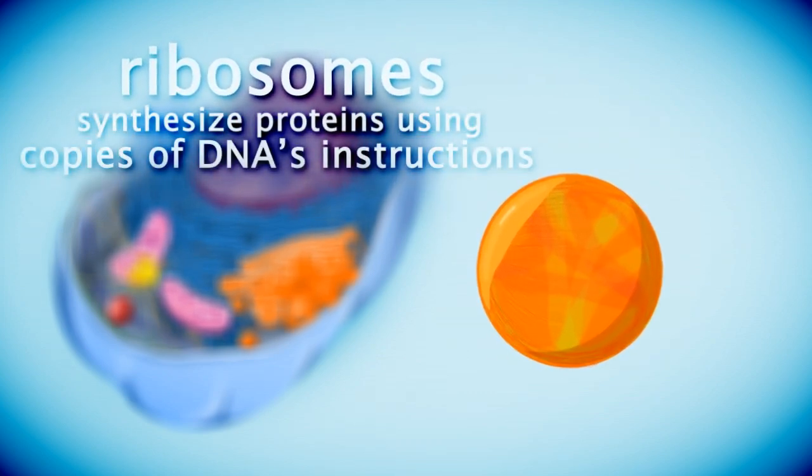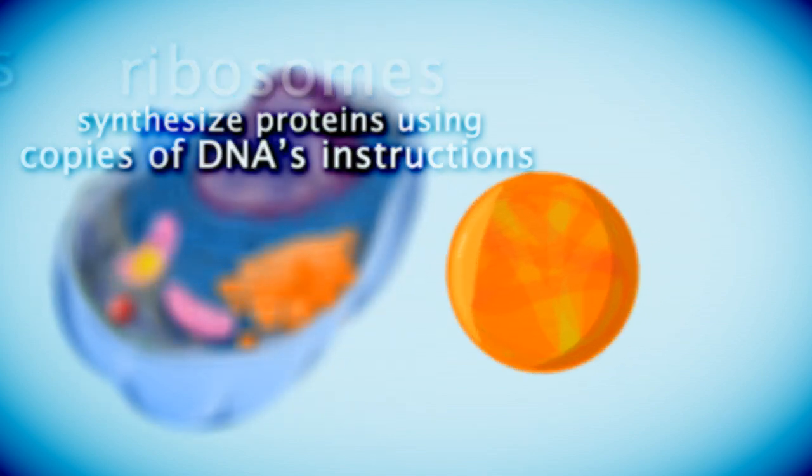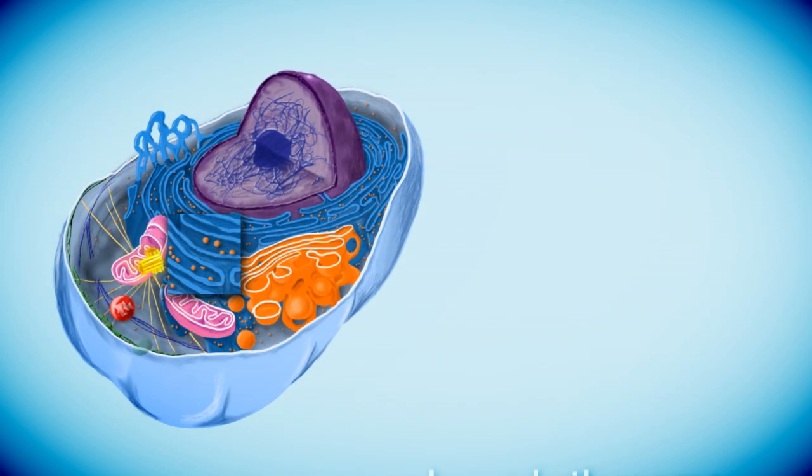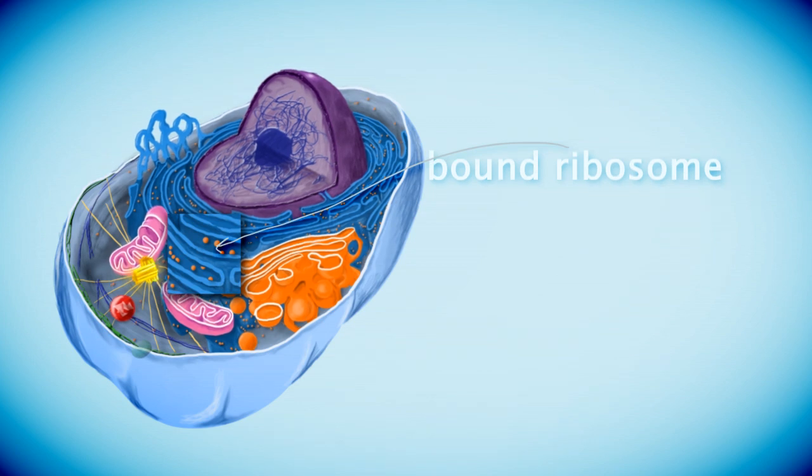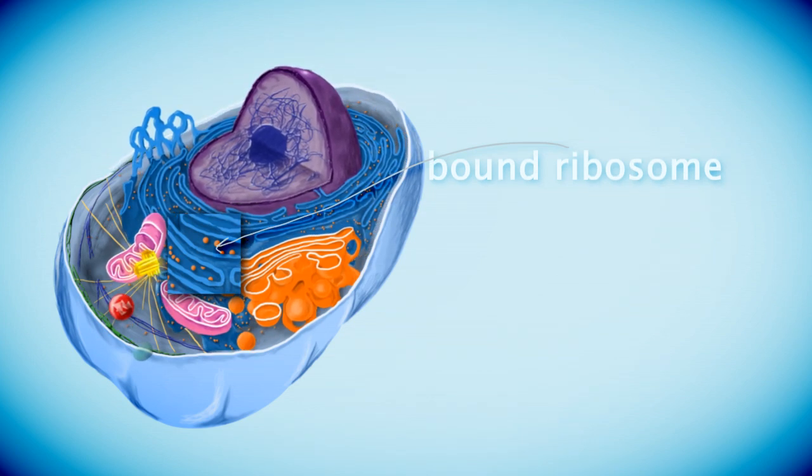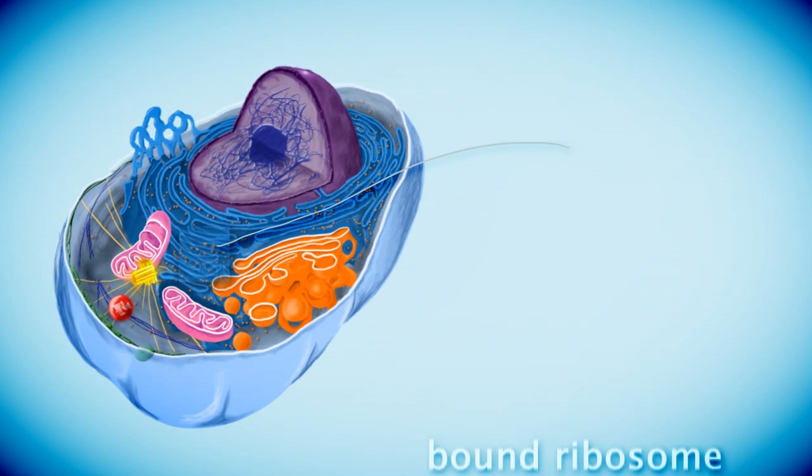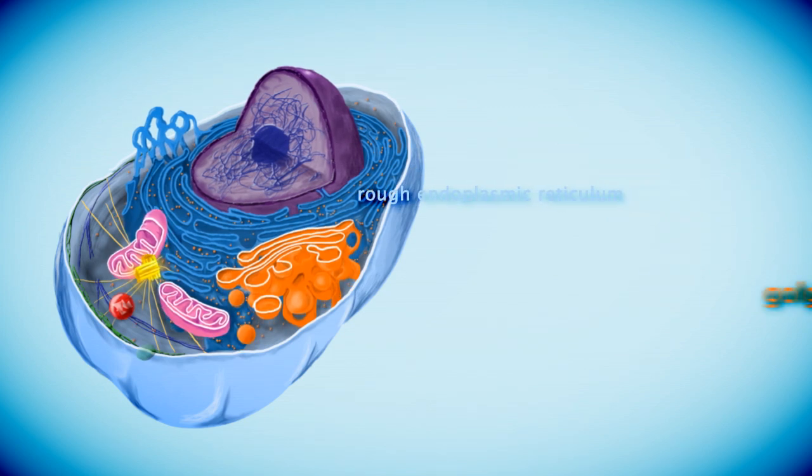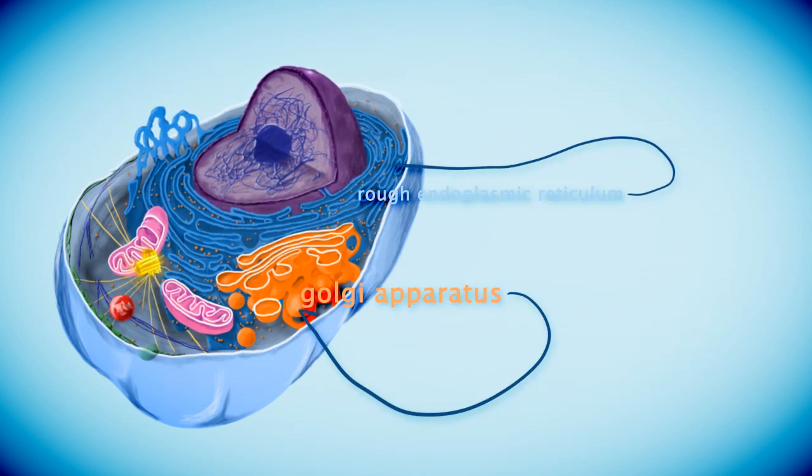Free-floating ribosomes produce proteins that will be used inside the cell, while bounded ribosomes produce proteins that will be shipped out of the plasma membrane. Bound ribosomes produce proteins that are packaged in the rough endoplasmic reticulum and are transported to the Golgi apparatus for further modification.